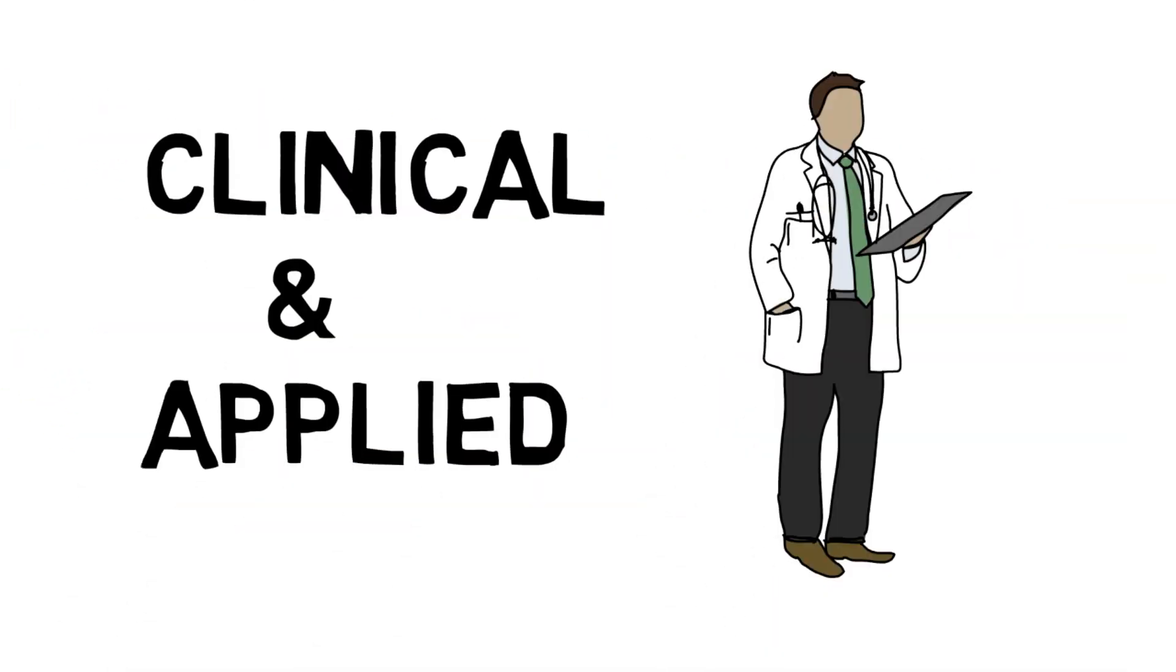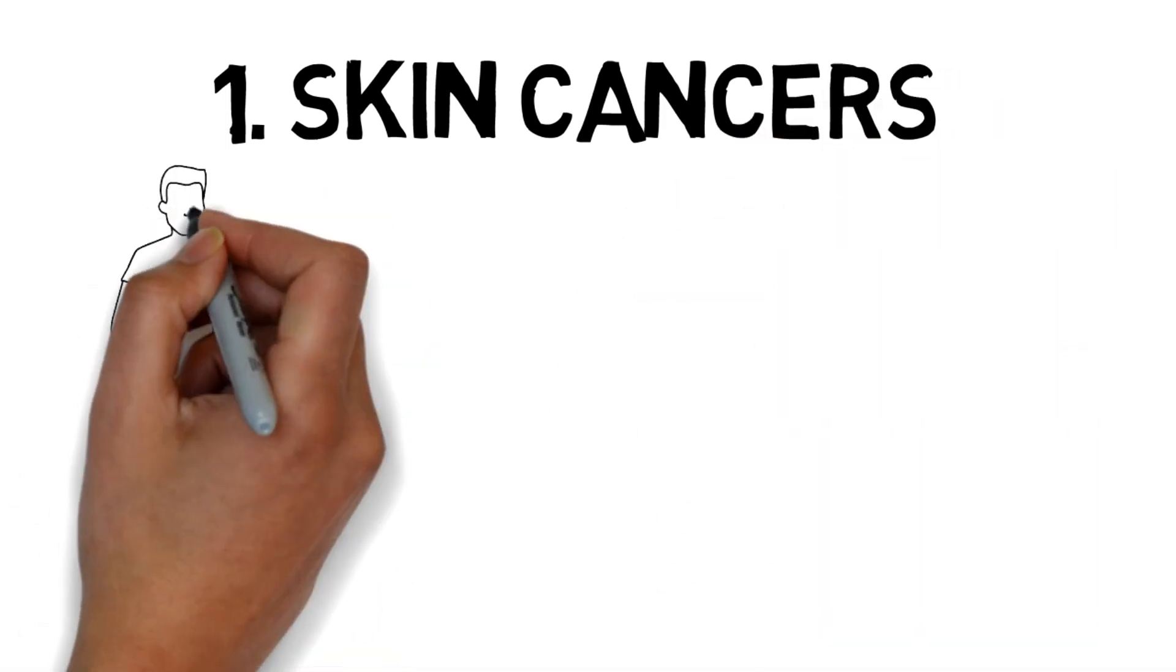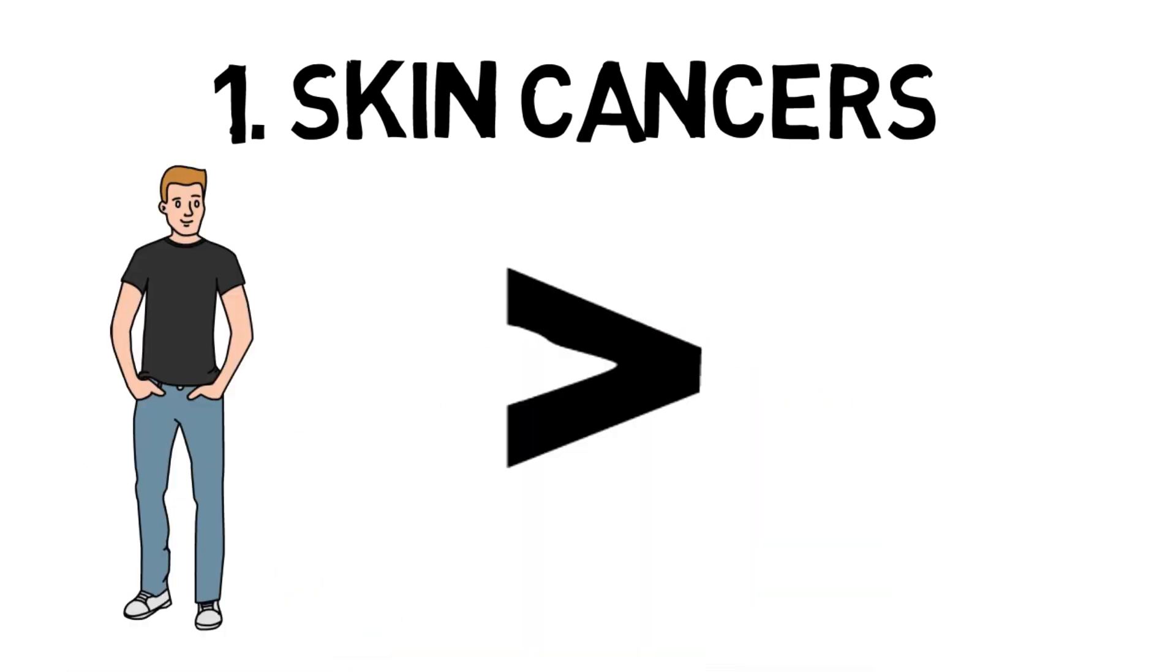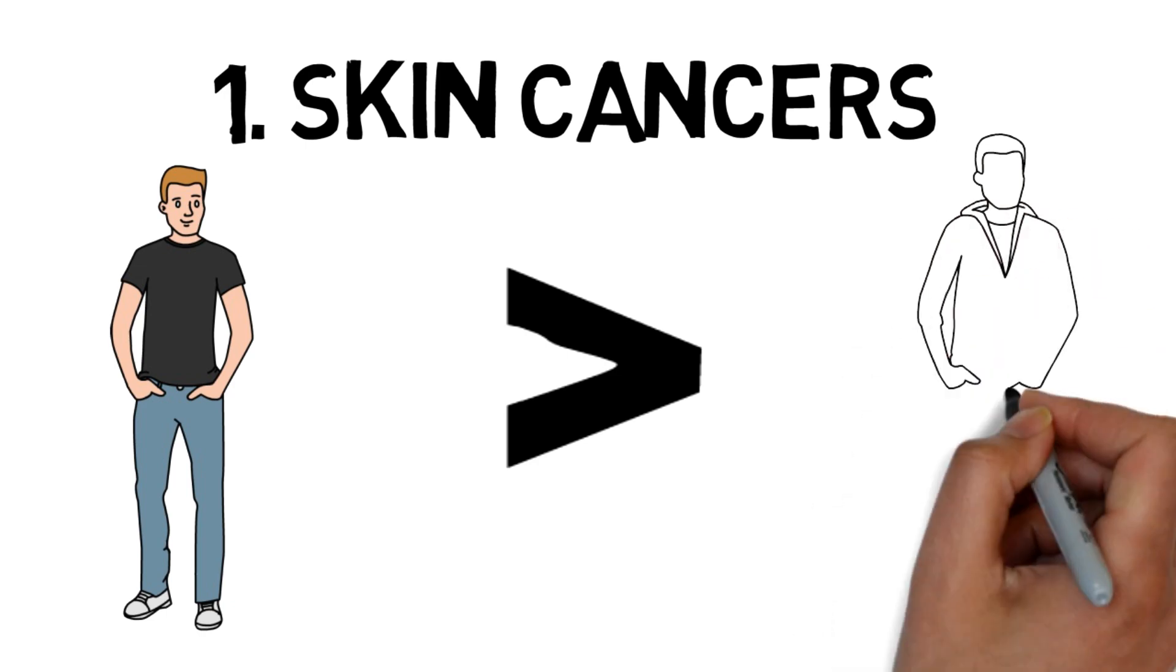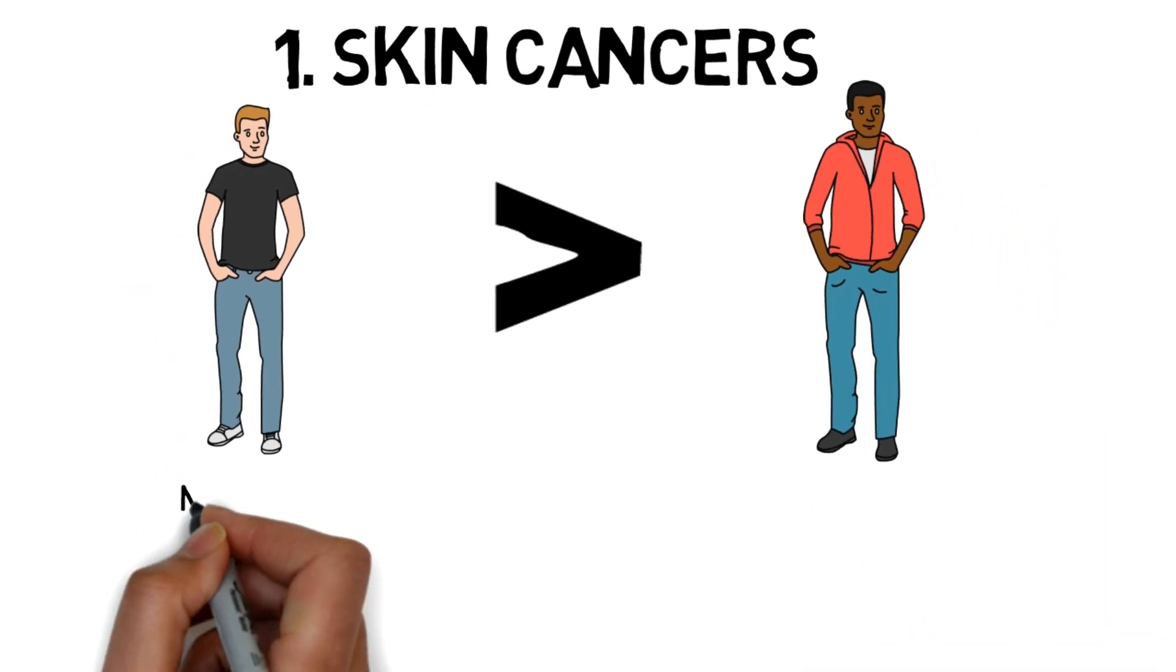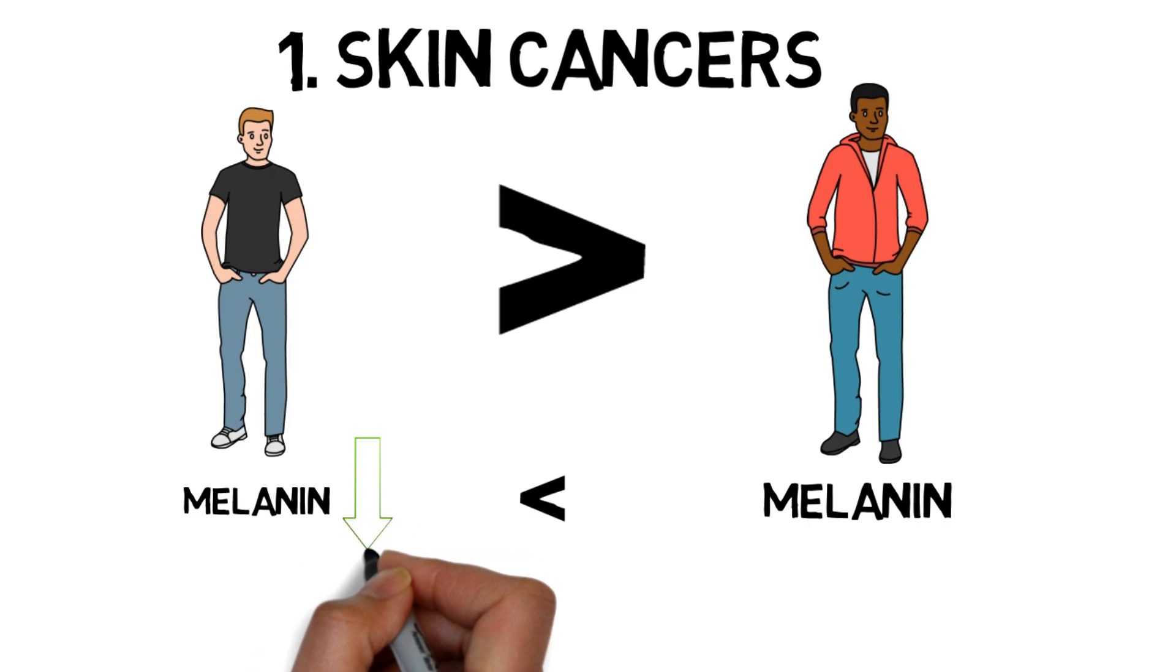Moving on to the clinical part, the first question is: skin cancers are more common in fair than in dark skin races. Why is this so? One type of cell present in the epidermis are melanocytes. These melanocytes produce a brown to black pigment known as melanin. The amount of melanin produced is responsible for your skin color, from black, brown, to white or fair skin.